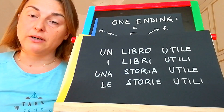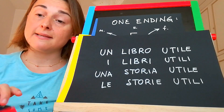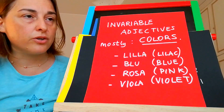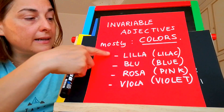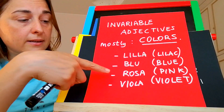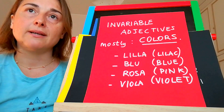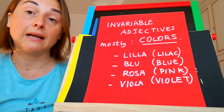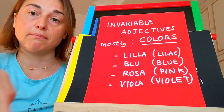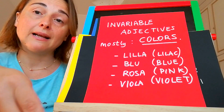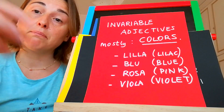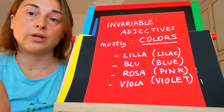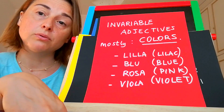Then we have our third class of adjectives — adjectives that are unchangeable. They are mostly colors, just a few like lilla, blu, rosa, and viola. So you can take a masculine noun, for example fiore, or a feminine noun like la rosa. And you say il fiore blu — the blue flower — and la rosa blu — the blue rose. If you pluralize, the adjective won't change: i fiori blu, le rose blu.